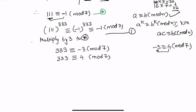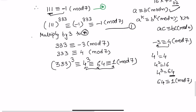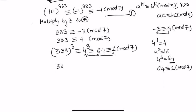Now I want to reduce 4 to either 1 or -1 so I can raise it to a power. Looking at powers of 4: 4^1 = 4, 4^2 = 16, 4^3 = 64. Since 64 - 1 = 63 = 7×9, we have 4^3 ≡ 1 (mod 7). So 333^111 = 333^(3×37) ≡ (4^3)^37 ≡ 1^37 ≡ 1 (mod 7).